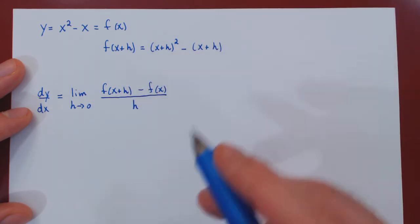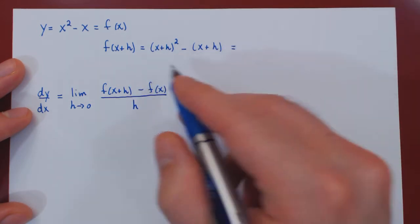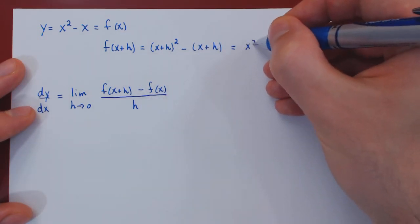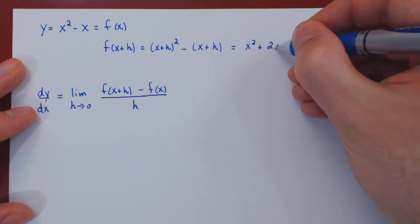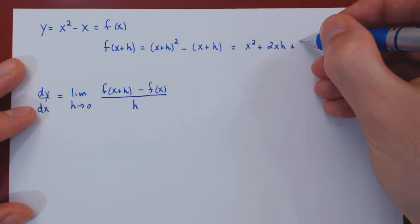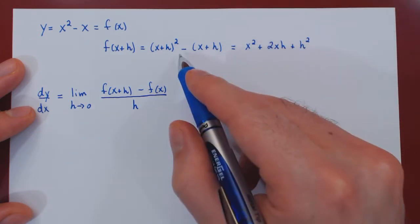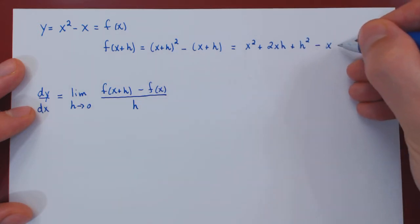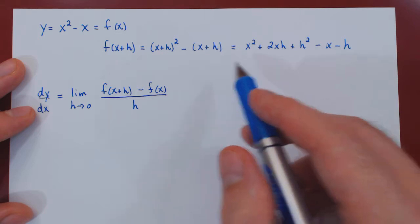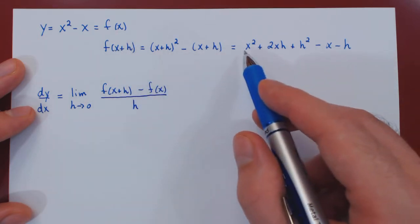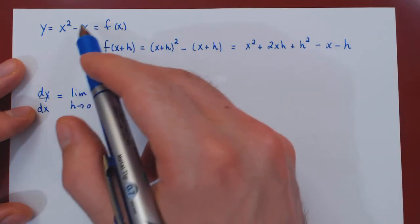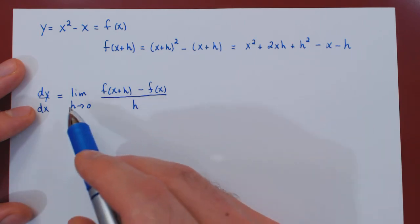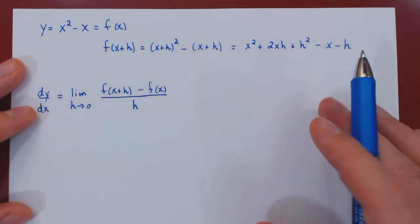Let's expand this out. So x plus h squared gives you x squared plus 2xh plus h squared. Then the negative, if you distribute it, gives you negative x, negative h. So now we have our f of x plus h expanded. We have our f of x, and h is the variable that approaches 0, so we have all the pieces.